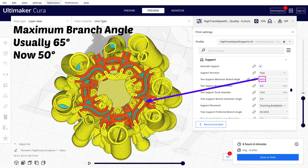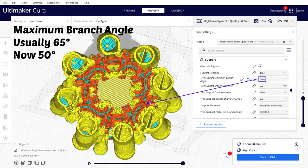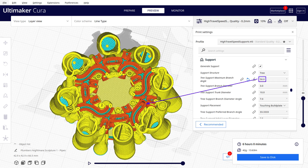At 50 degrees, the branches still enter horizontal parts of the tubes, but they don't reach far and can be easily removed from there.